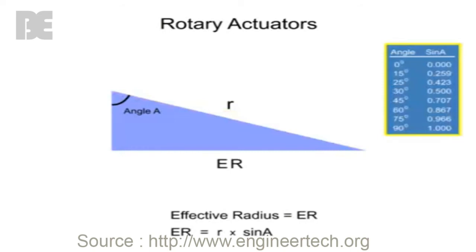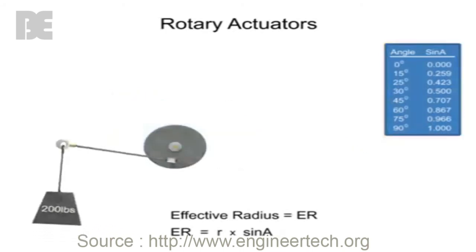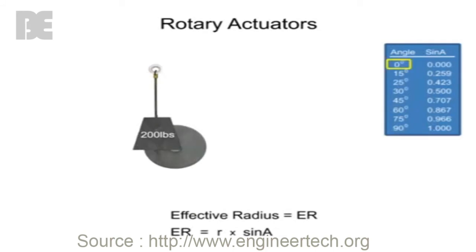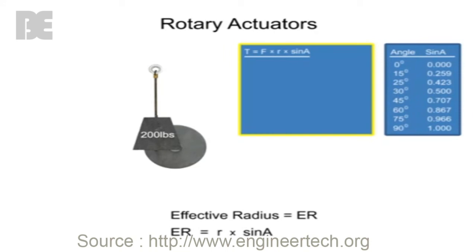Sine has values that vary from 0 to 1 for angles between 0 and 90 degrees. When the lever arm is in the vertical position, the angle between the rope and lever arm is 0. The sine of angle 0 is also 0. Therefore, when the lever arm is vertical, the torque will be equal to 0.